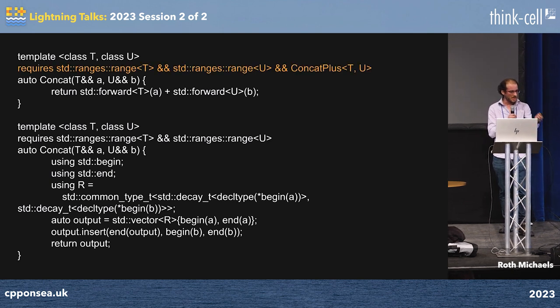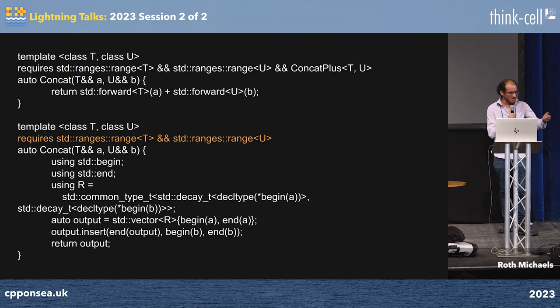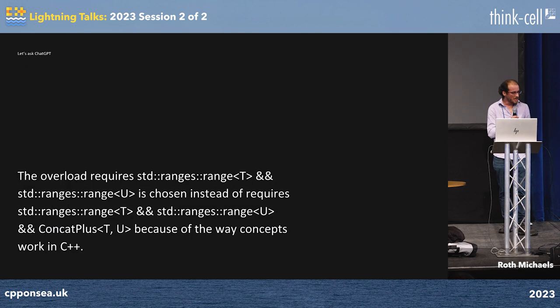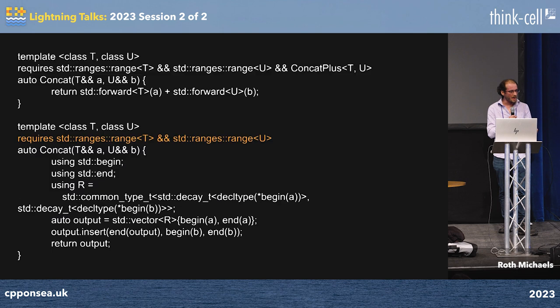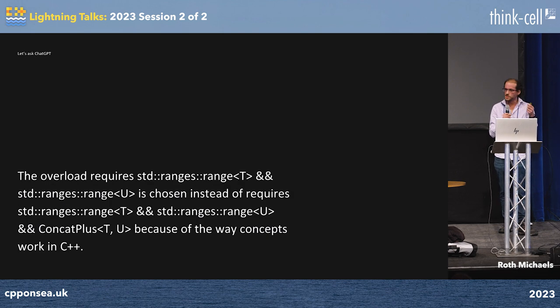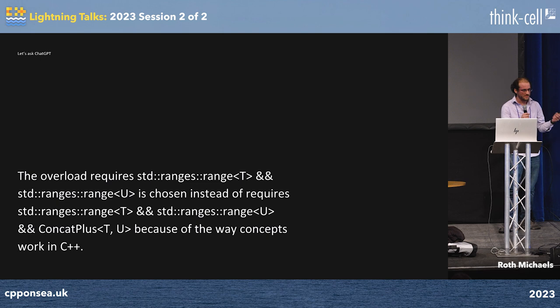I had these two concepts: one is that it's a range and you can plus it; the other is that it's just a range. I expected the top one to be selected because you can now plus these things. But in GCC and Clang it did not — MSVC did.